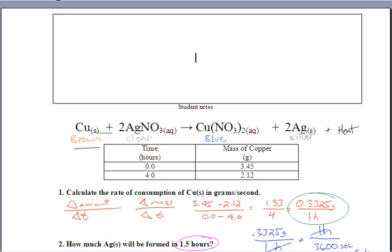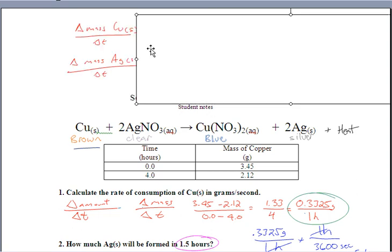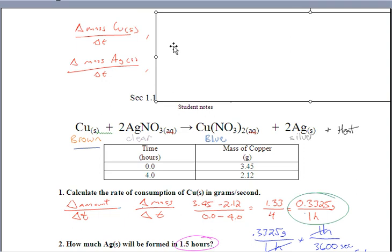The first thing that I see right off the bat is we have solids, and solids you can monitor the mass. We have two solids: a copper solid and a silver solid, so you can monitor the mass of those things. Copper solid is a reactant - that mass is going to decrease as time goes on. Silver solid is a product - that mass is going to increase as time goes on.